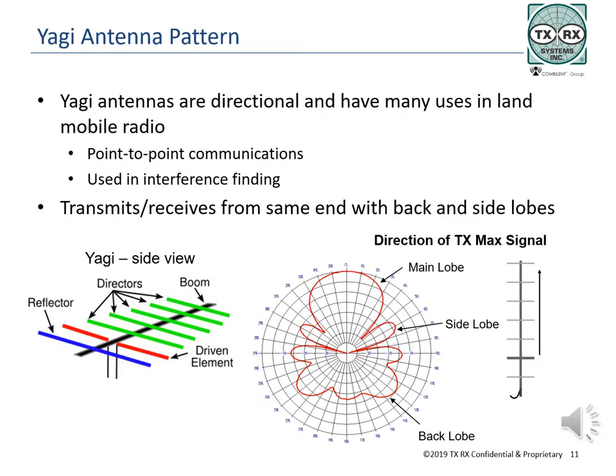The Yagi antenna is probably one of the most easily recognized antennas. It is used for special conditions such as point-to-point communications, pattern fill, and for signal hunts sponsored by the local ham radio operators club. The antenna was originally named the Yagi-Uda antenna after the two Japanese scientists who worked on its development. The Yagi antenna is directional in that it puts more of the signal in the forward direction. There is no amplifier involved, no magic. It takes the signal that would have been going in a circular pattern and sends it into a narrower direction, allowing the signal to go further because it has a narrower beam.